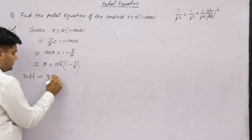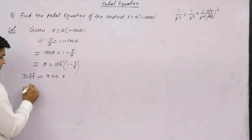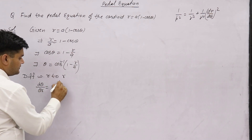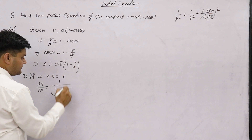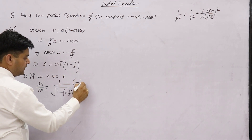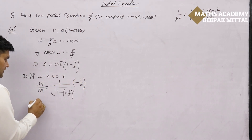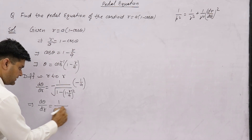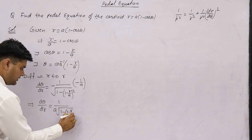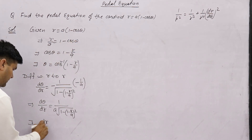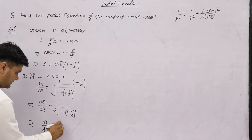Differentiating with respect to r: dθ/dr = -1 / √(1 - (1 - r/a)²) × (derivative of inner term). Therefore dr/dθ = a × √(1 - (1 - r/a)²).